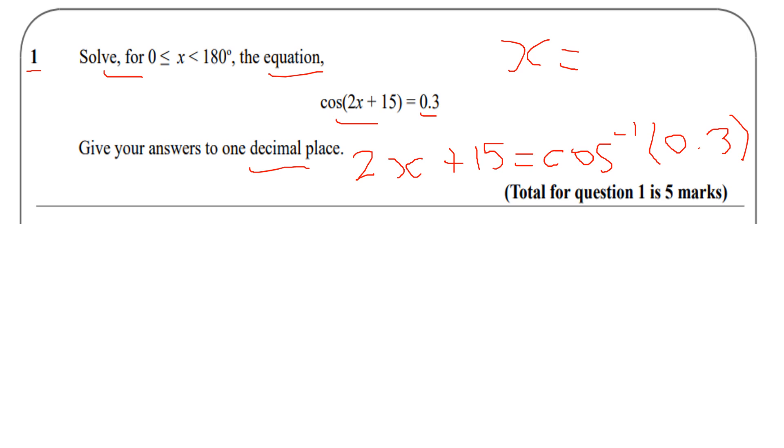Now I'm going to subtract 15 and then divide by 2, so we have x = ½(cos⁻¹(0.3) - 15). I'm laying it out like this clearly, deliberately, so when we enter it into our calculators, we'll get an answer.